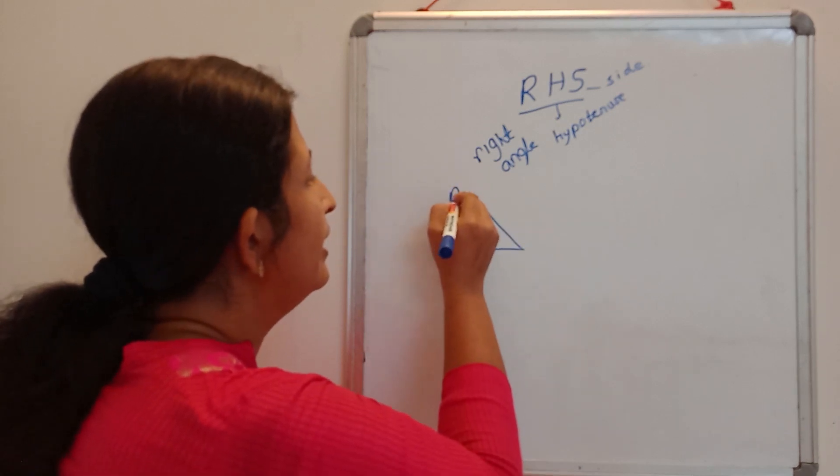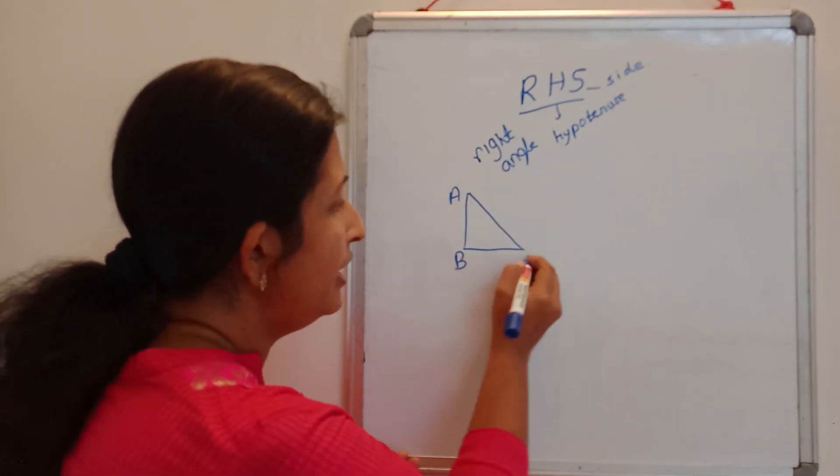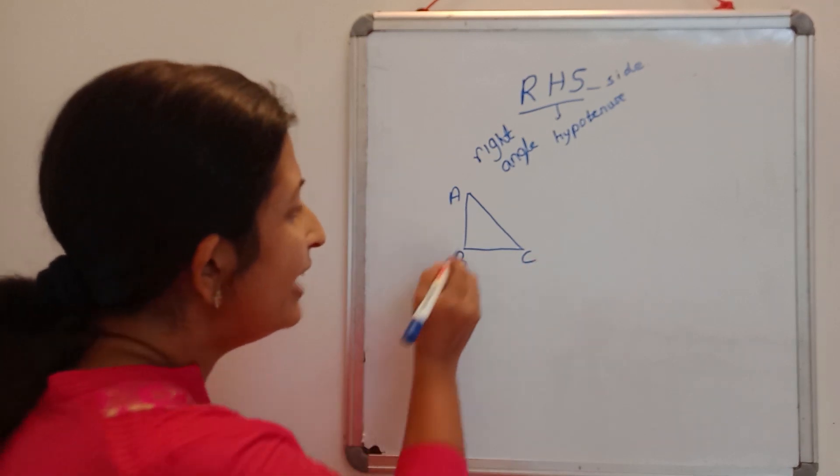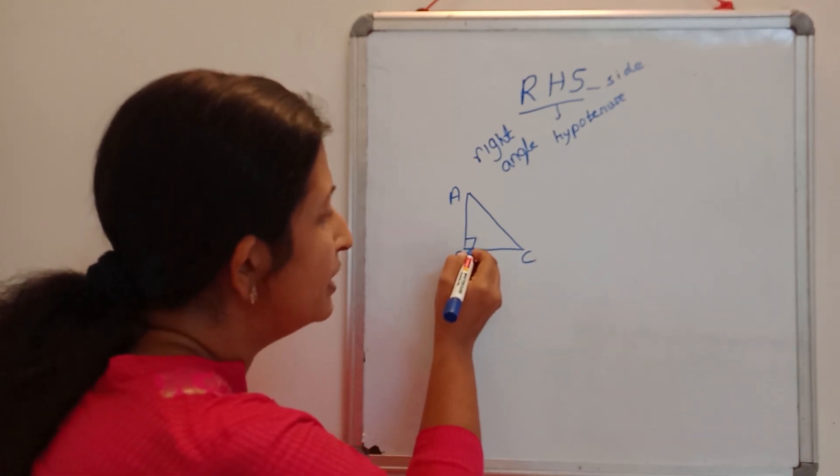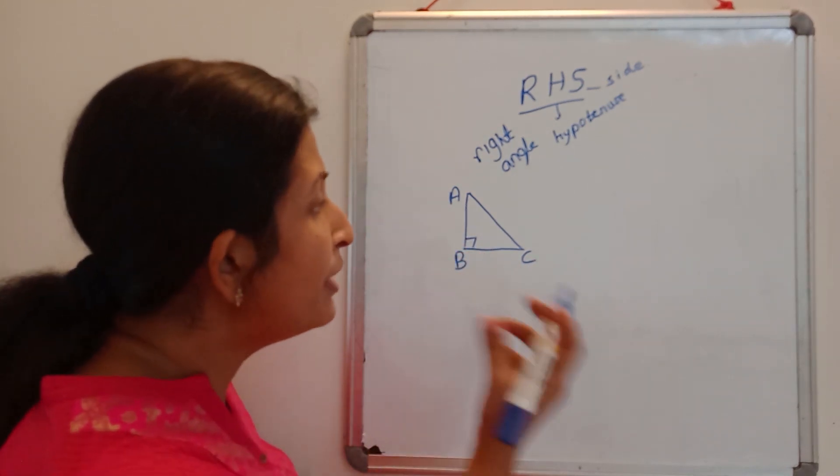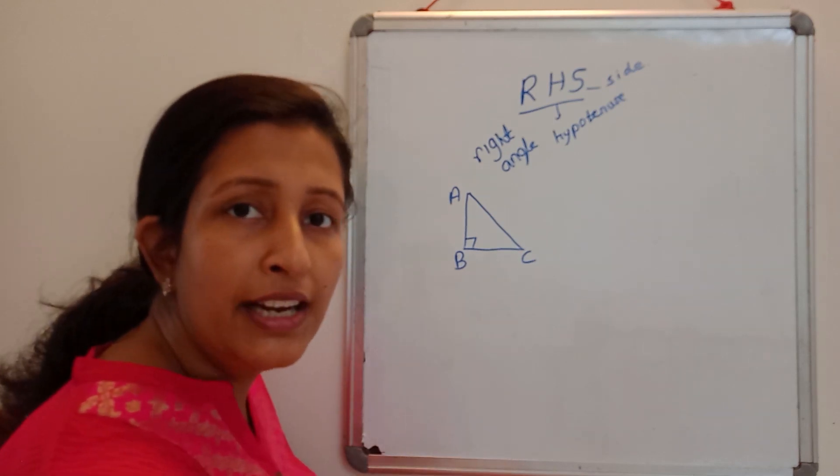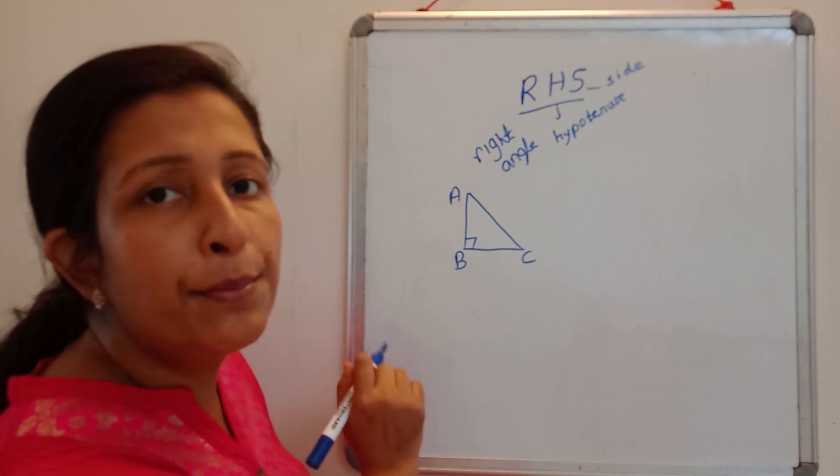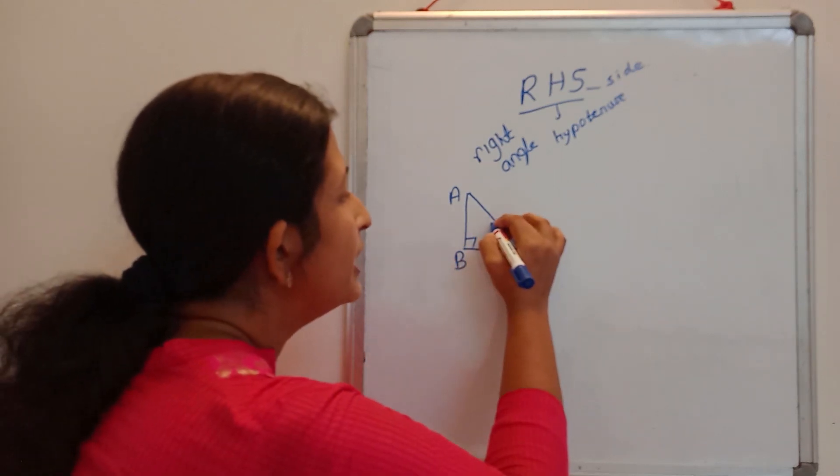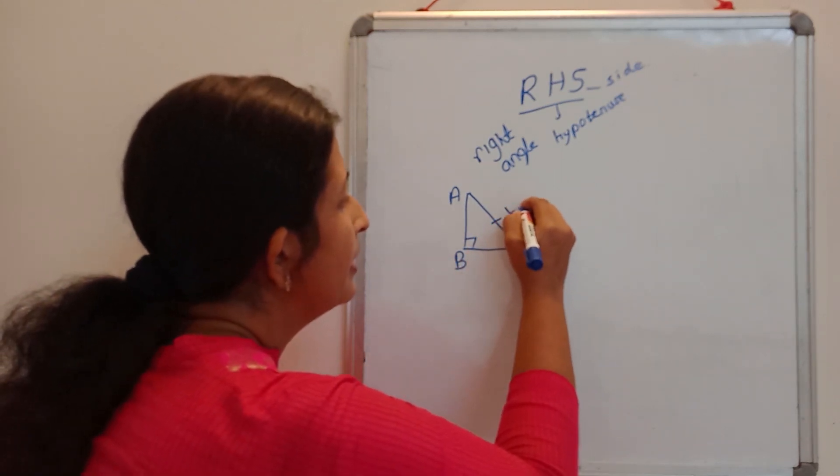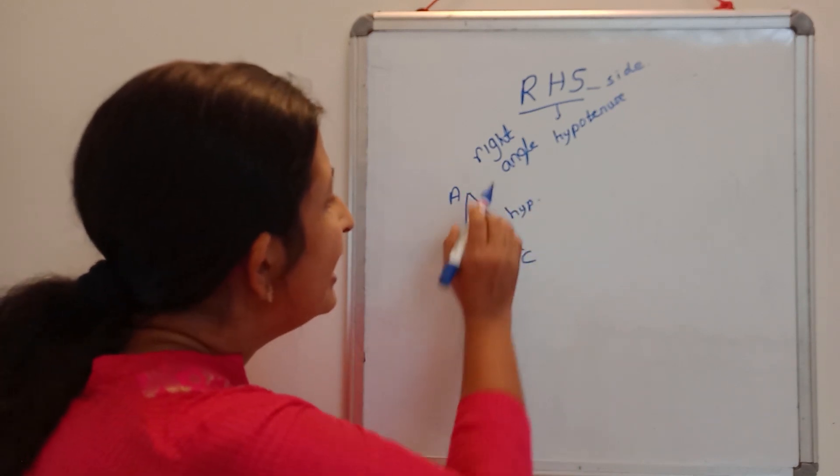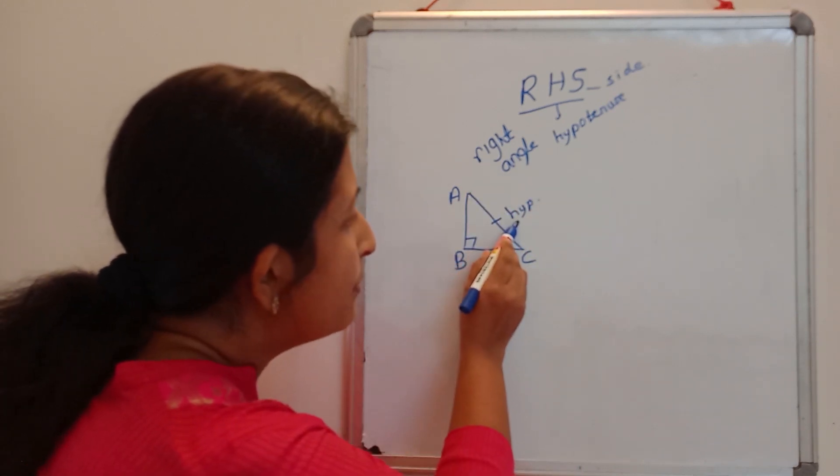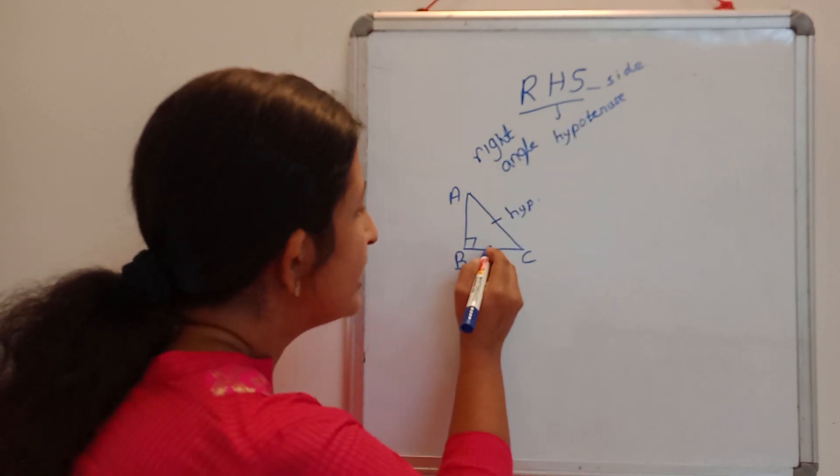That means if we have a triangle like this, this is triangle ABC, and this is the right angle of this triangle. And what will be the hypotenuse of this triangle? Just opposite side of the right angle is the hypotenuse of the triangle. So this side is hypotenuse, and right angle and hypotenuse then one side.